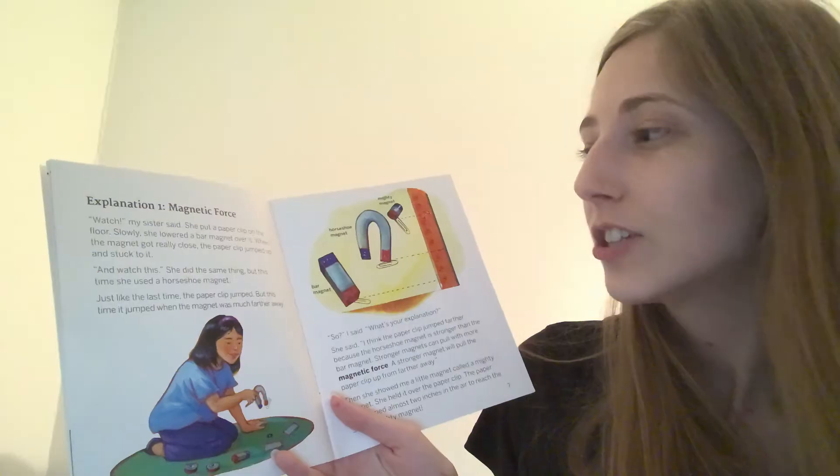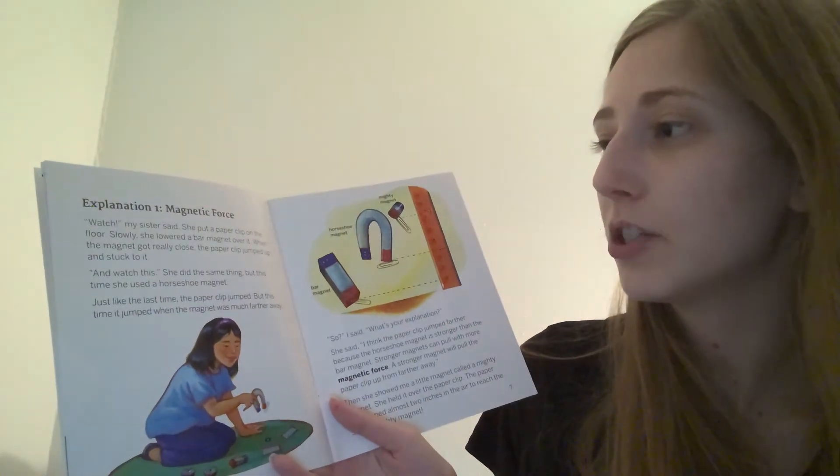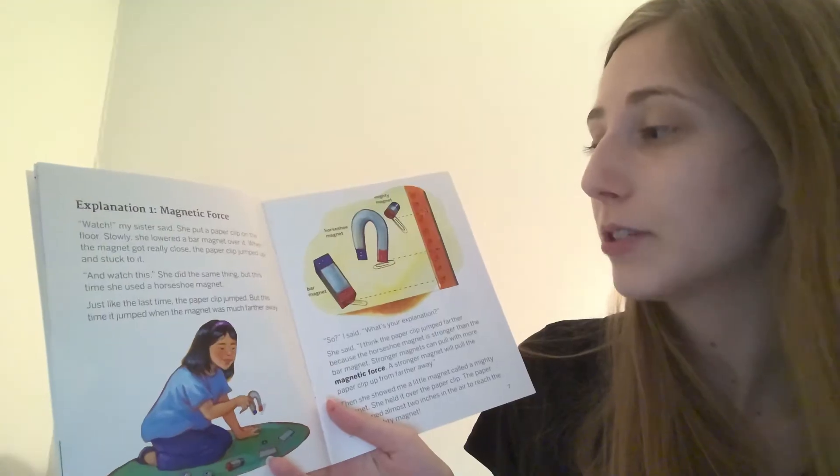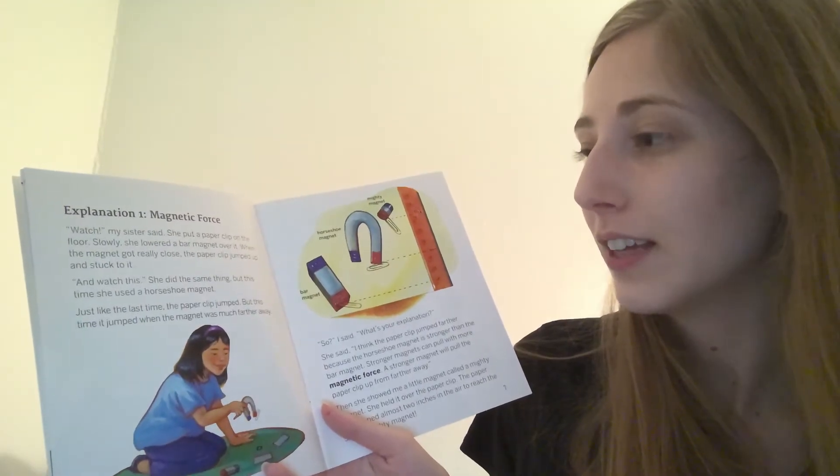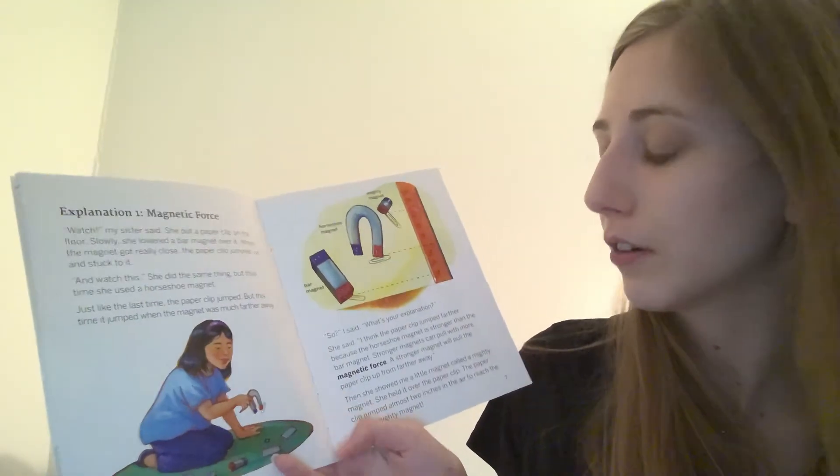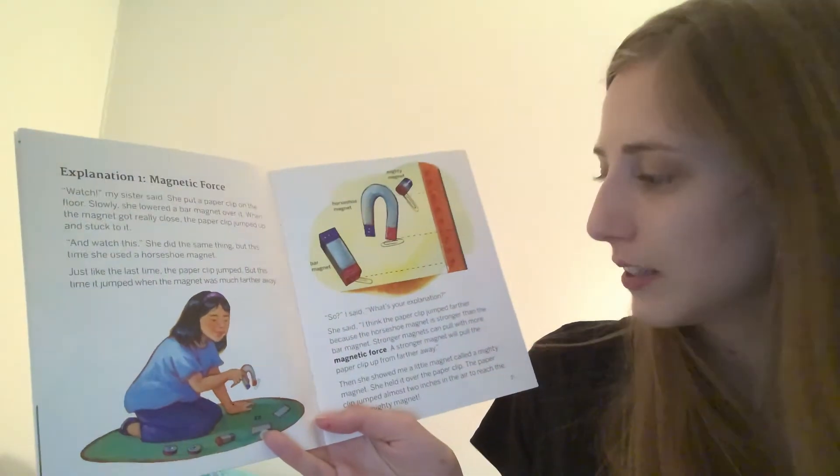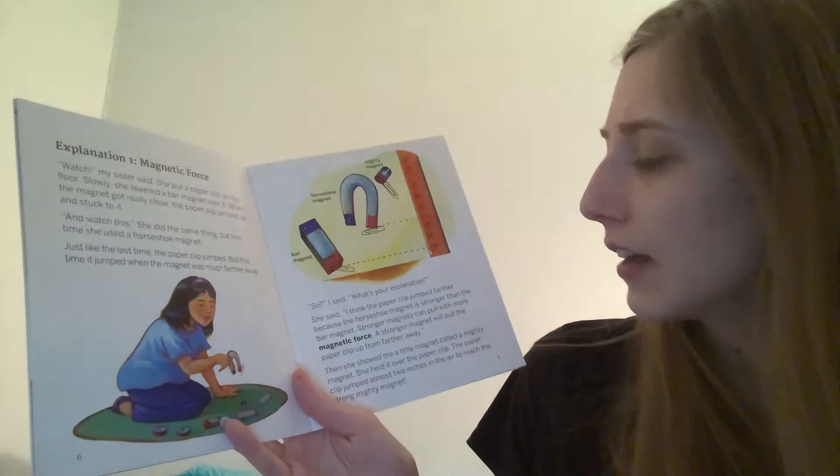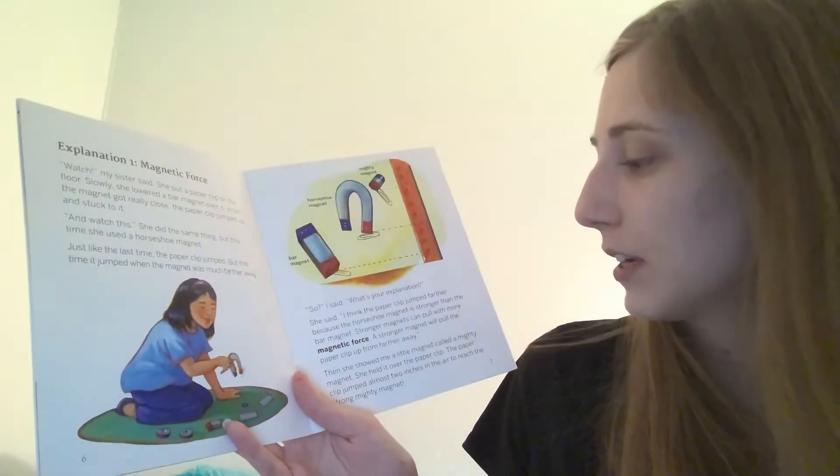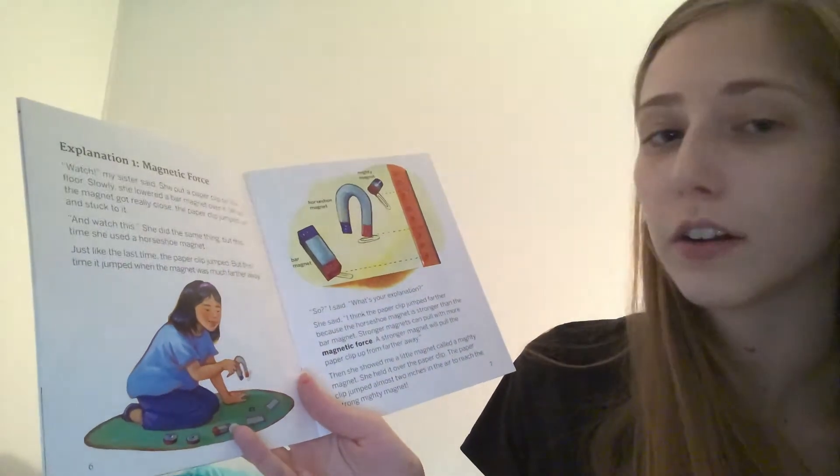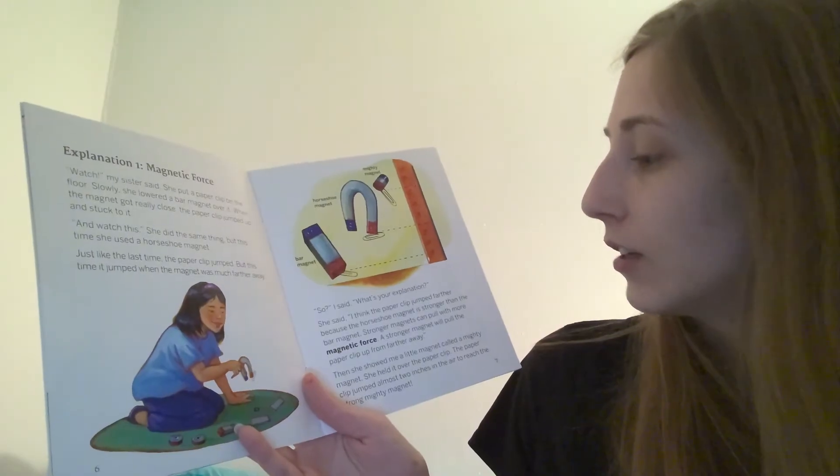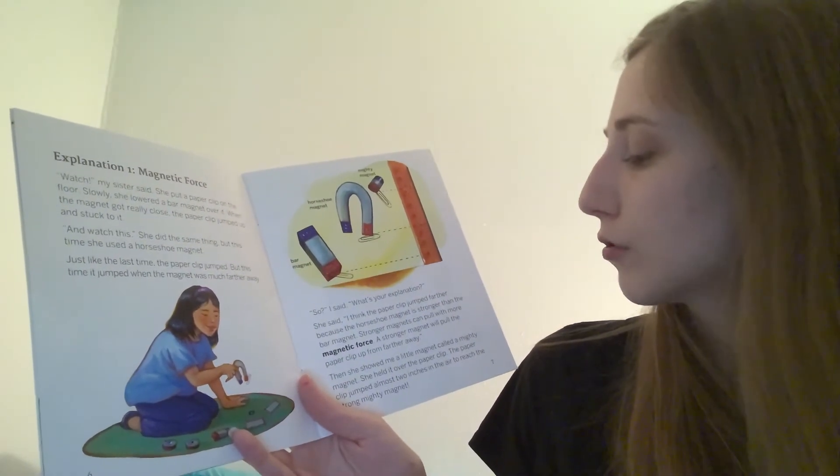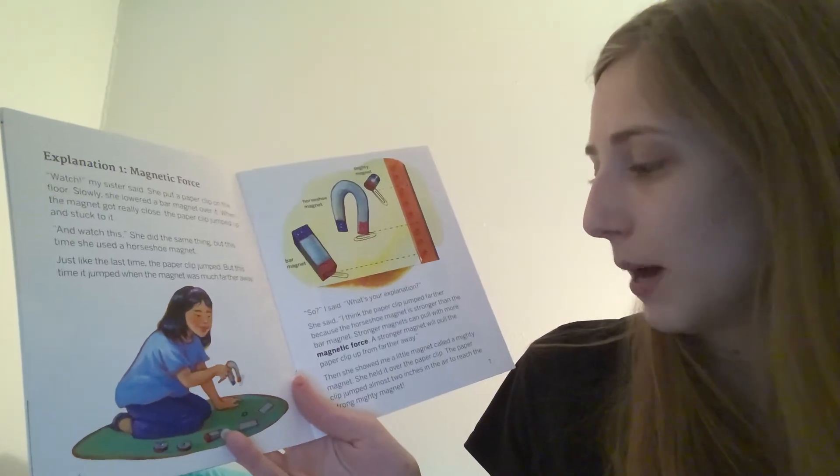And watch this. She did the same thing, but this time she used a horseshoe magnet. Just like last time, the paper clip jumped. But this time, it jumped when the magnet was much farther away. So, I said, what's your explanation? She said, I think the paper clip jumped farther because the horseshoe magnet is stronger than the bar magnet. Stronger magnets can pull with more magnetic force. A stronger magnet will pull the paper clip up from farther away.